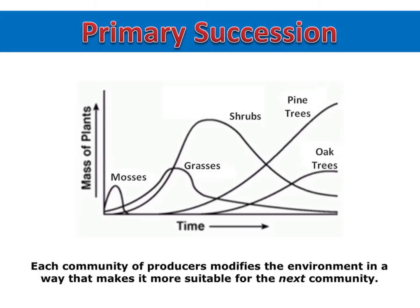In this ecosystem, mosses were the pioneer species and the first to dominate the landscape. But as soil formed and grasses began to grow, the moss population declined. Eventually the soil became good enough for shrubs to grow, and as the shrub population grew, the grasses declined as the light was blocked out.